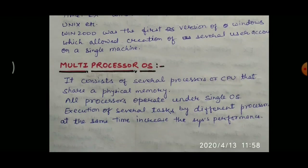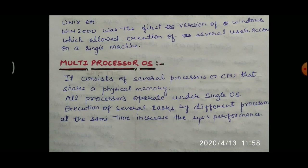The next type of OS is the multi-processor OS. Multi-processor means more than one CPU is present, and only one operating system manages all those processors. It consists of several processors or CPUs that share physical memory, and all processors operate under a single OS. Execution of several tasks by different processors at the same time increases the system performance.